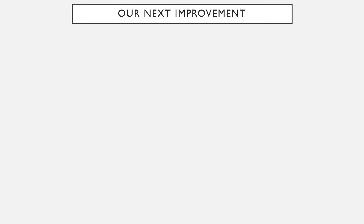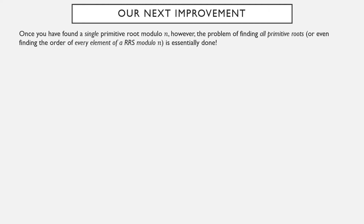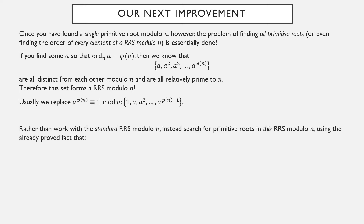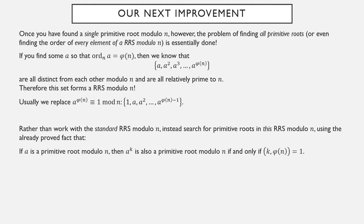That's a possible improvement — it allows us to cut down some computation. But once you have found a single primitive root mod n, the problem of finding all of them is actually done. Suppose you find a single primitive root. We know that the powers of the primitive root exactly create a reduced residue system mod n: 1, a, a squared, all the way up to a to the phi of n minus 1. Because if a is a primitive root mod n, a to the k is also a primitive root mod n if and only if that power k is relatively prime to phi of n.